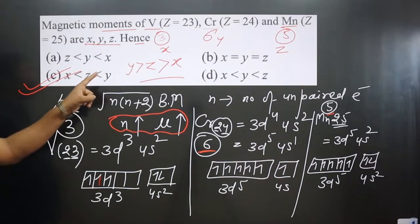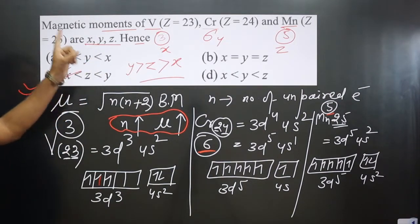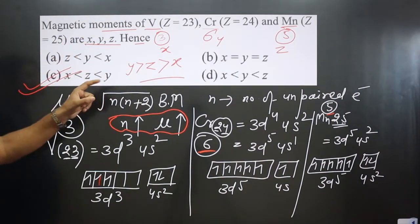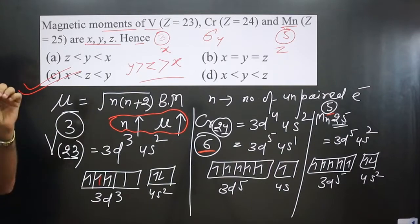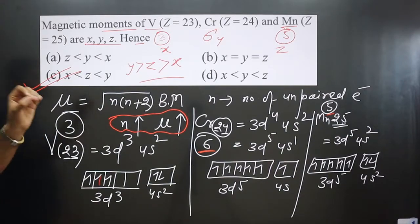Y has the highest magnetic moment due to the maximum number of unpaired electrons. If you like this video, please share and subscribe to the channel.